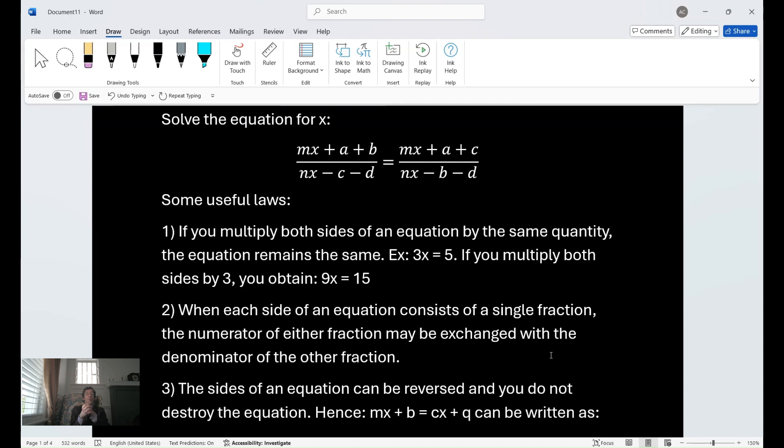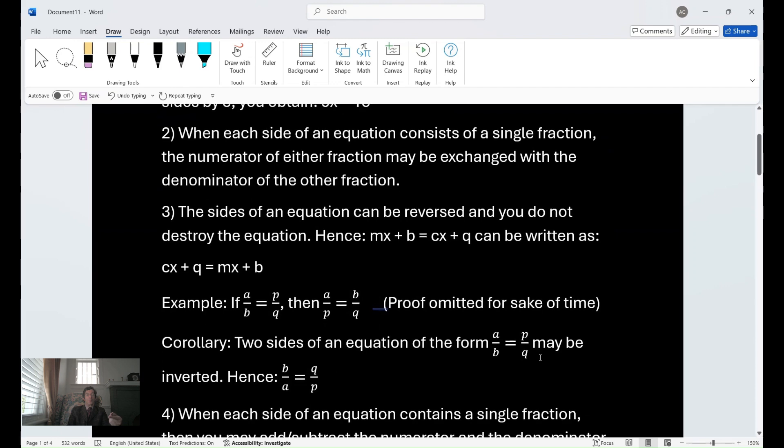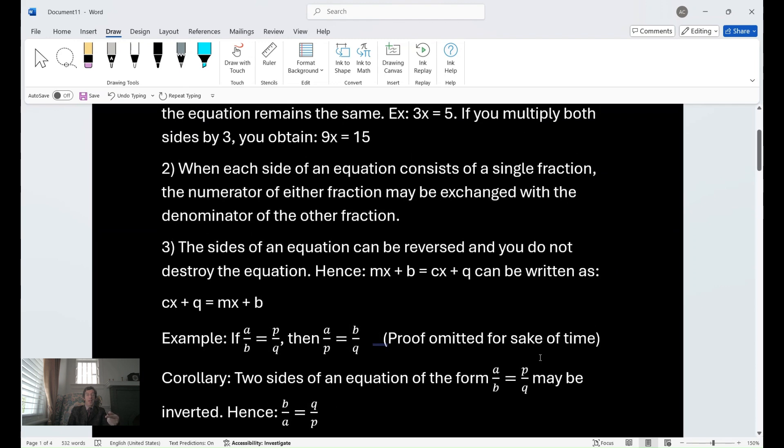The second point here of the law is when each side of an equation consists of a single fraction, then the numerator of either fraction may be exchanged with the denominator of the other fraction. The third thing is, the sides of an equation can be reversed, and you do not destroy the statement, the equation. So if I gave you m x plus b equals c x plus q, you can write that as c x plus q equals m x plus b. And I put a little example here, if a over b equals p over q, then a over p equals b over q. Now I've omitted the proof because I don't have time to do it. But there is, of course, a proof of that.